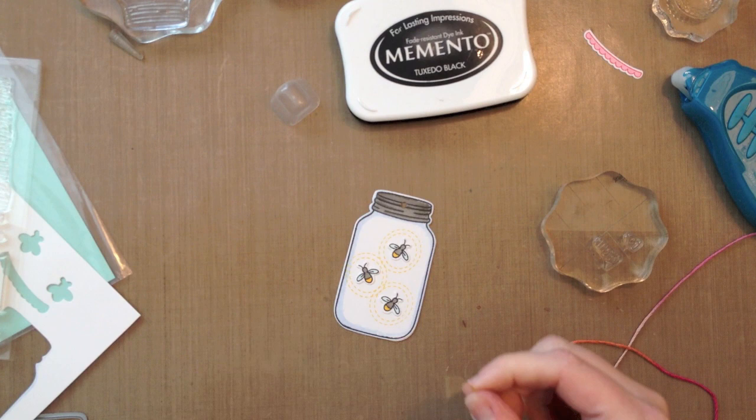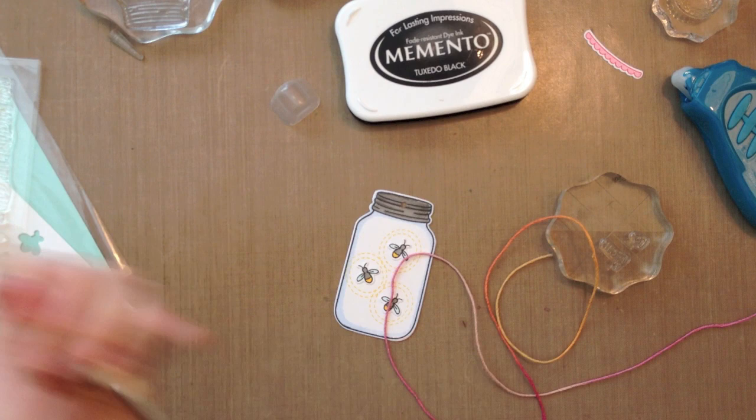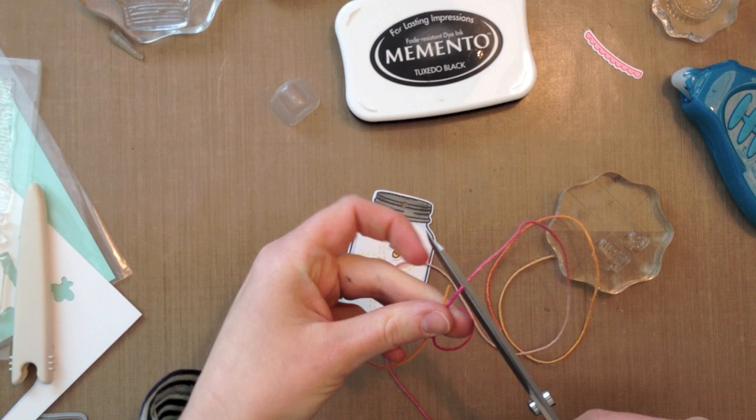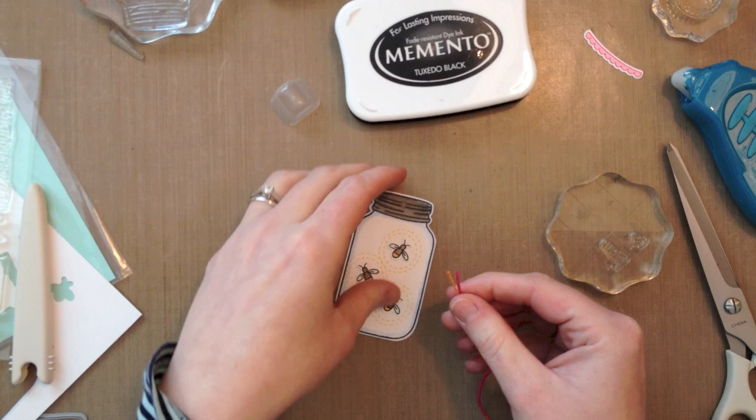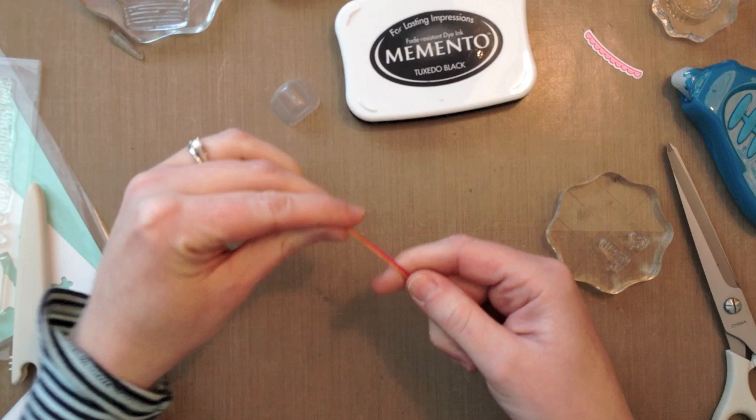And I've got a little bit of the pink lemonade Lawn Trimmings twine and I'm just going to cut a length of it for the top of my tag. So I'm just going to kind of double it over and cut it so I know how long to cut it and thread it through the hole. And then just tie a little knot at the top.